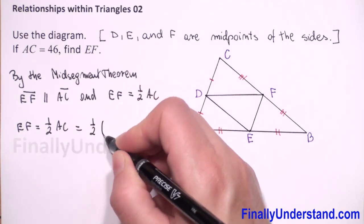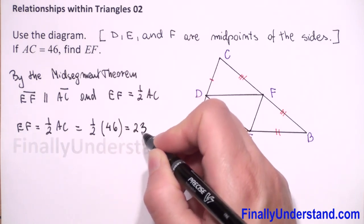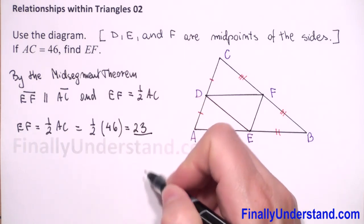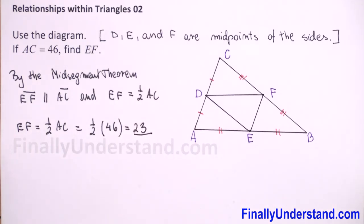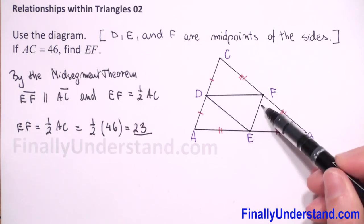So we have one half times 46, so this is equal to 23. This is my solution. We found the measure of EF segment.